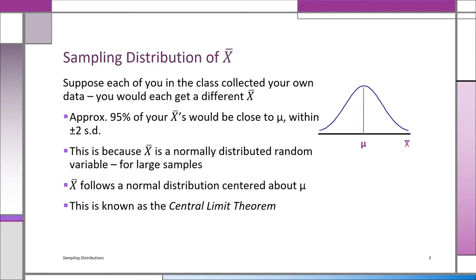Let's continue imagining this distribution of the x-bars. Every time we could imagine taking another sample, we would have another value of x-bar. We could have hundreds, thousands, millions of these samples, until we imagine a fully formed population of x-bars. Approximately 95% of the x-bars would be very close to the true population mean mu, within plus and minus two standard deviations. This is because the x-bar random variable is normally distributed, as long as the sample size is relatively large. It follows a normal distribution centered about mu — the same mean as the underlying x population.